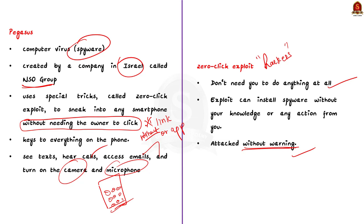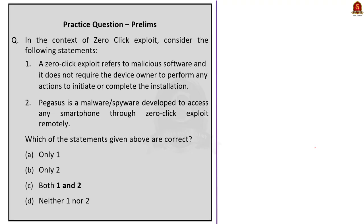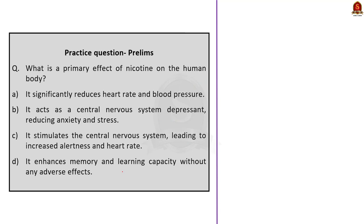In the context of zero-click exploit, consider the following statements. First: a zero-click exploit refers to malicious software that does not require the device owner to perform any actions to initiate or complete the installation — this statement is correct. Second: Pegasus is a malware or spyware developed to access any smartphone through zero-click exploit remotely — this statement is also correct. They are asking which statements are correct, so the answer is option C, both one and two.